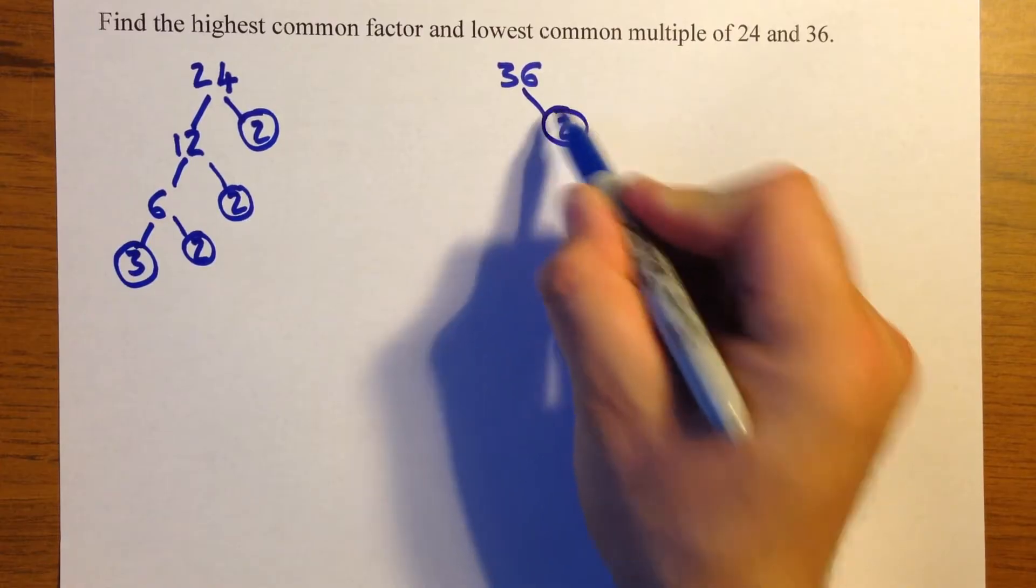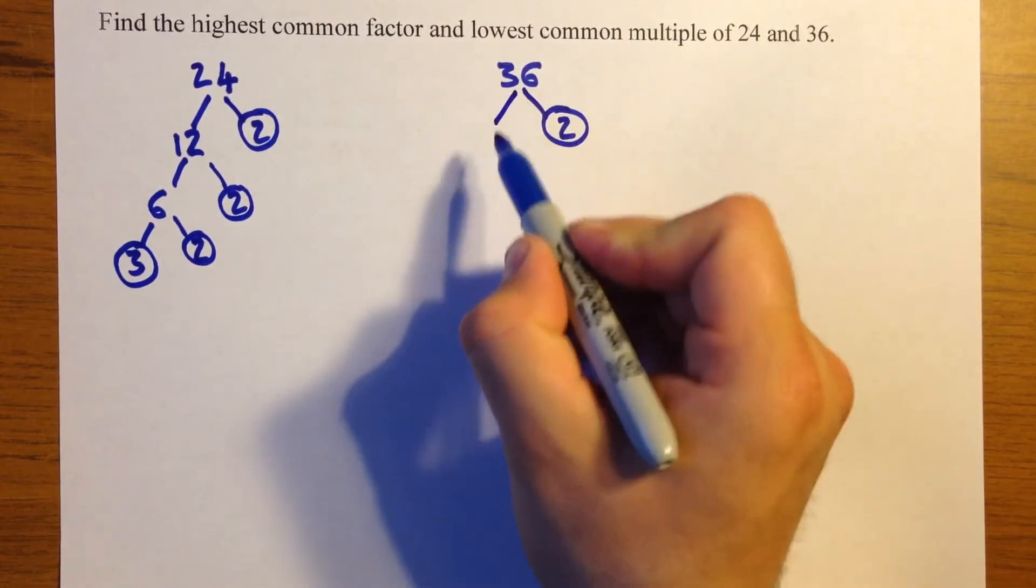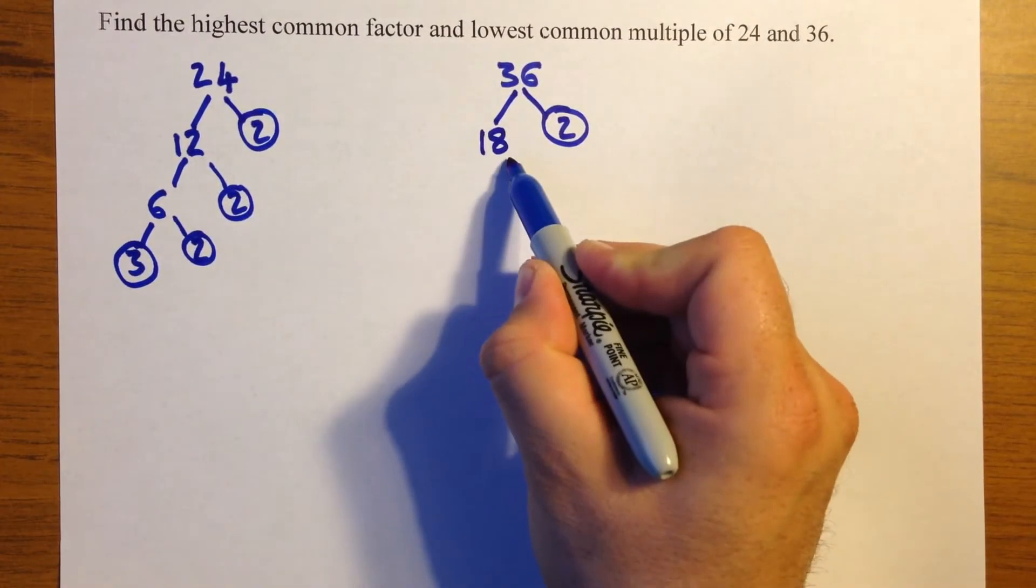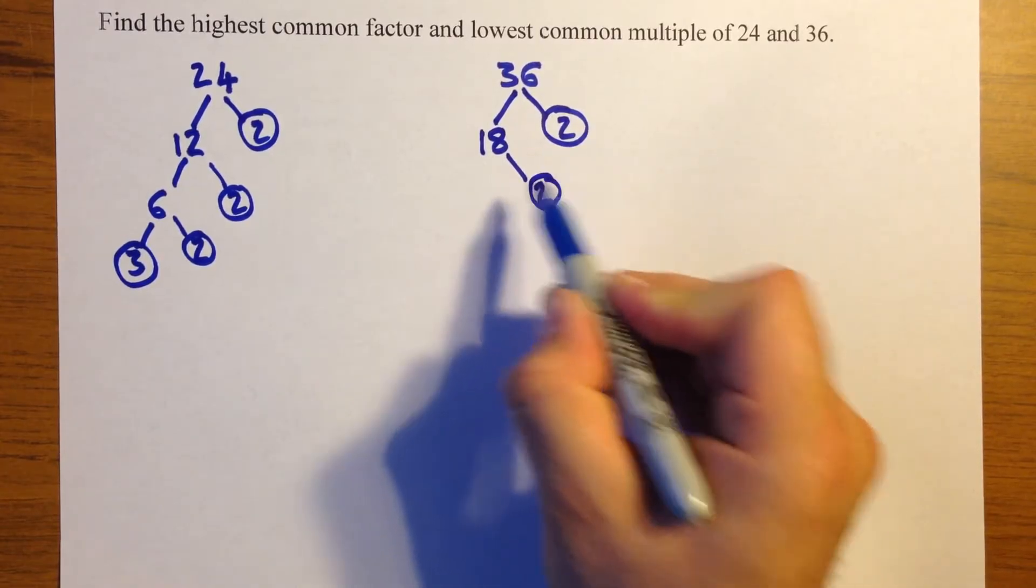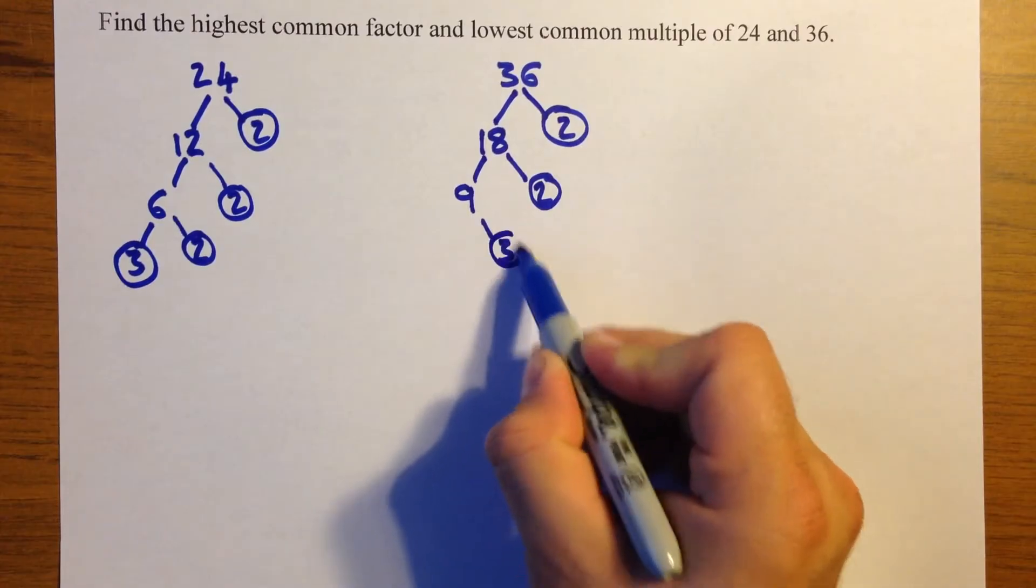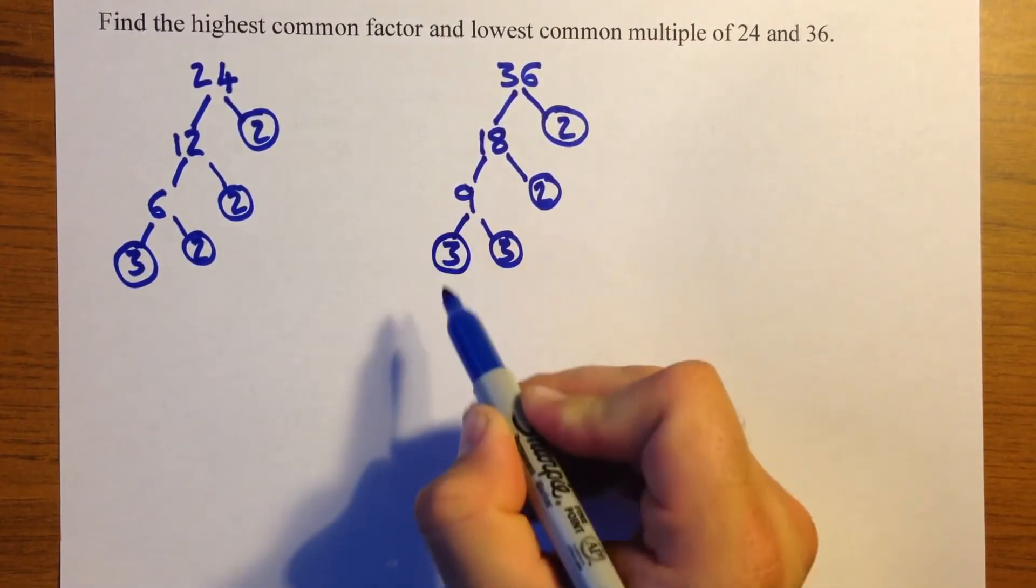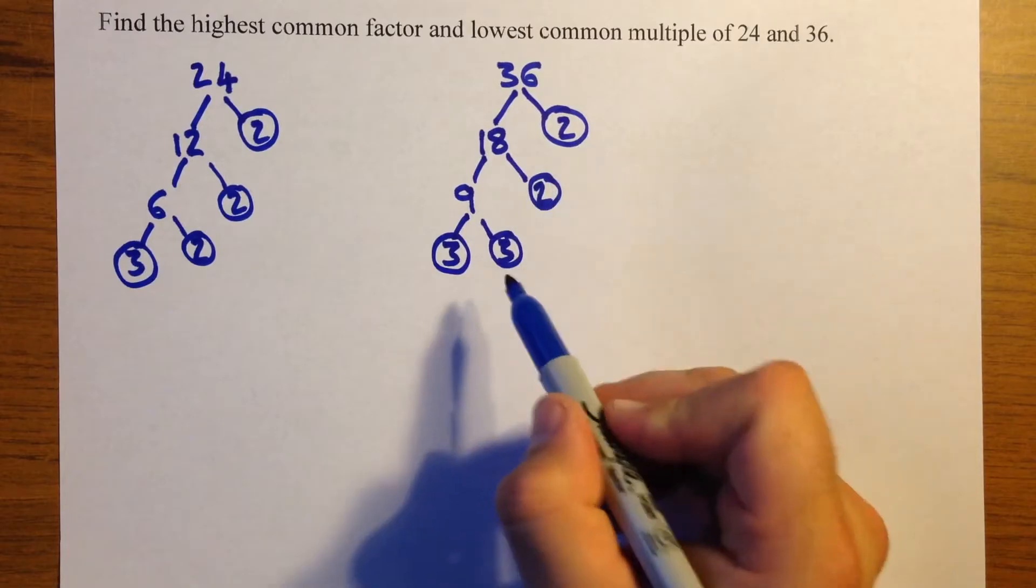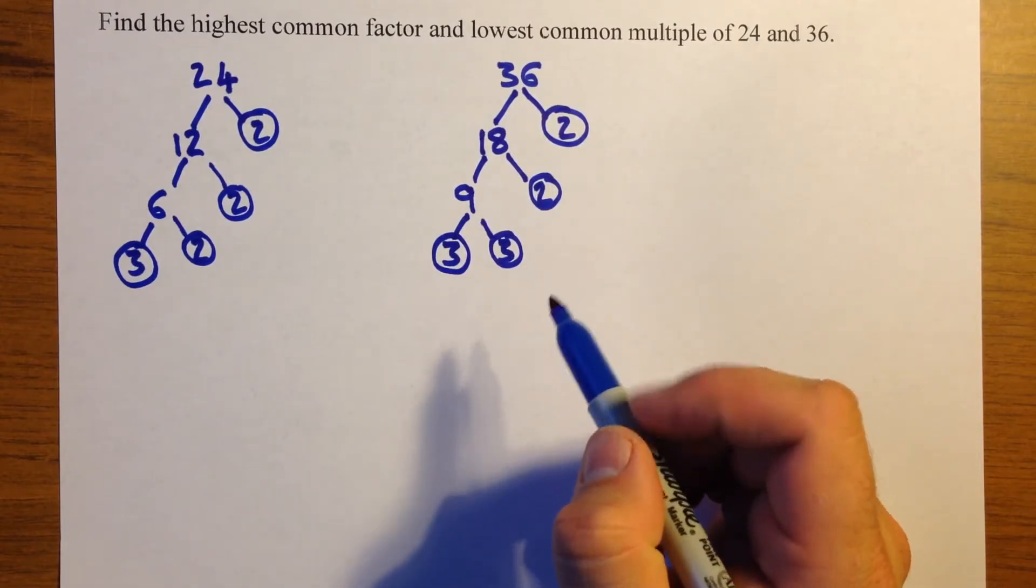Next we'll start with 36. Divide by 2. Leaves us with 18. Divide by 2 again. Leaves us with 9. Divide by 3 now because you can't divide by 2. And that leaves us with 3. So all the numbers in the circles are the prime factors of these two numbers.